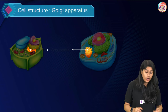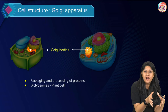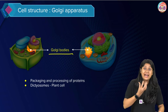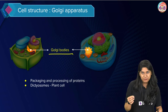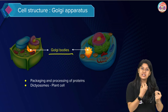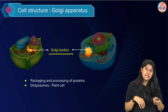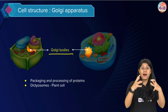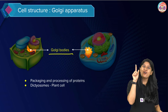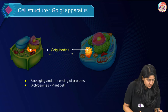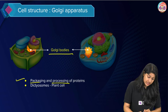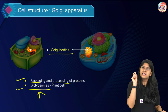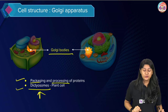Moving ahead from ER, we have the Golgi bodies, also called the Golgi apparatus. Molecules from the ER move towards the Golgi apparatus where packaging, modification, and transportation occur. ER sends lipids and proteins to the Golgi bodies, which modify these materials, properly package them, and send them to different parts of the cell. That is why we call the Golgi apparatus the postman of the cell.